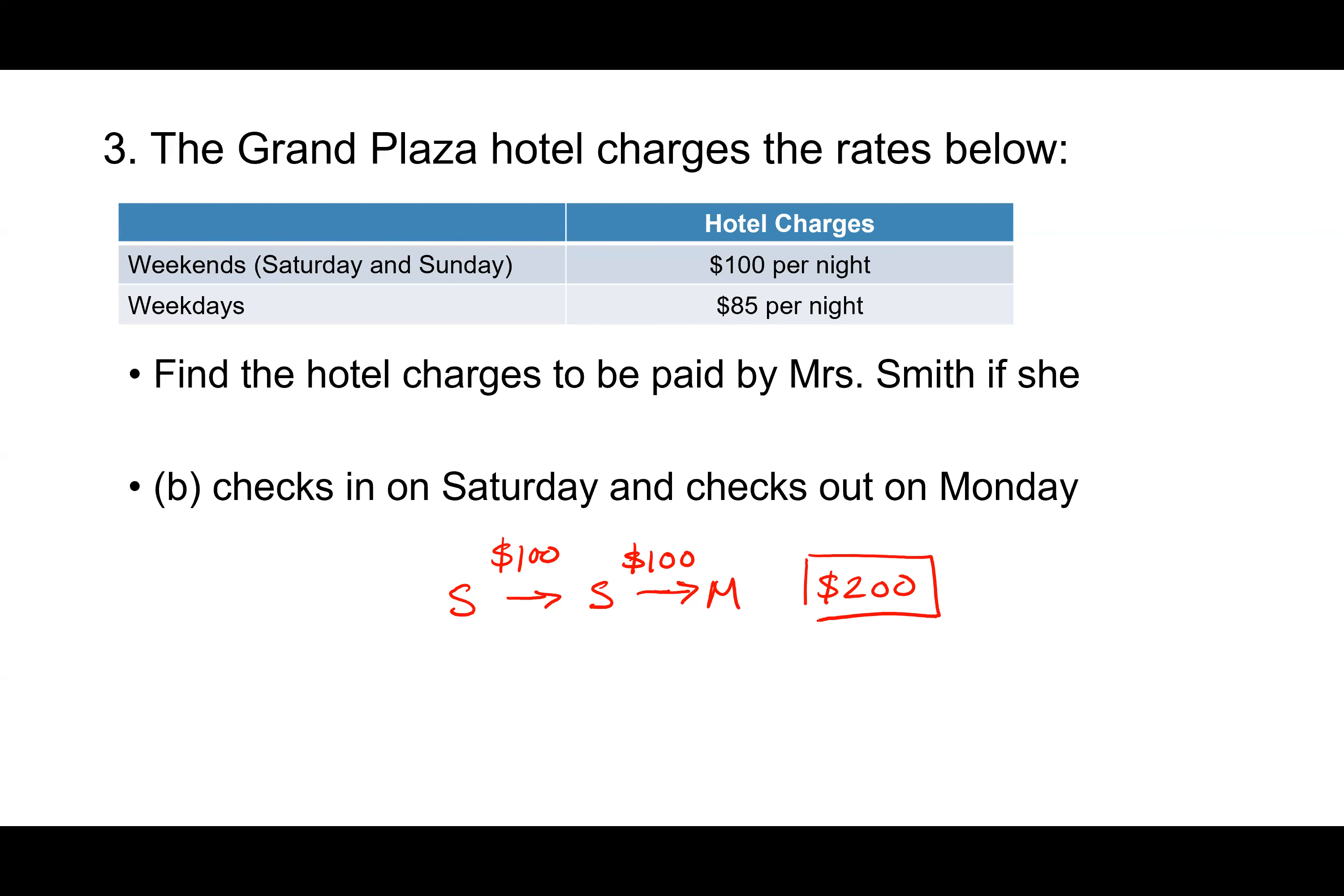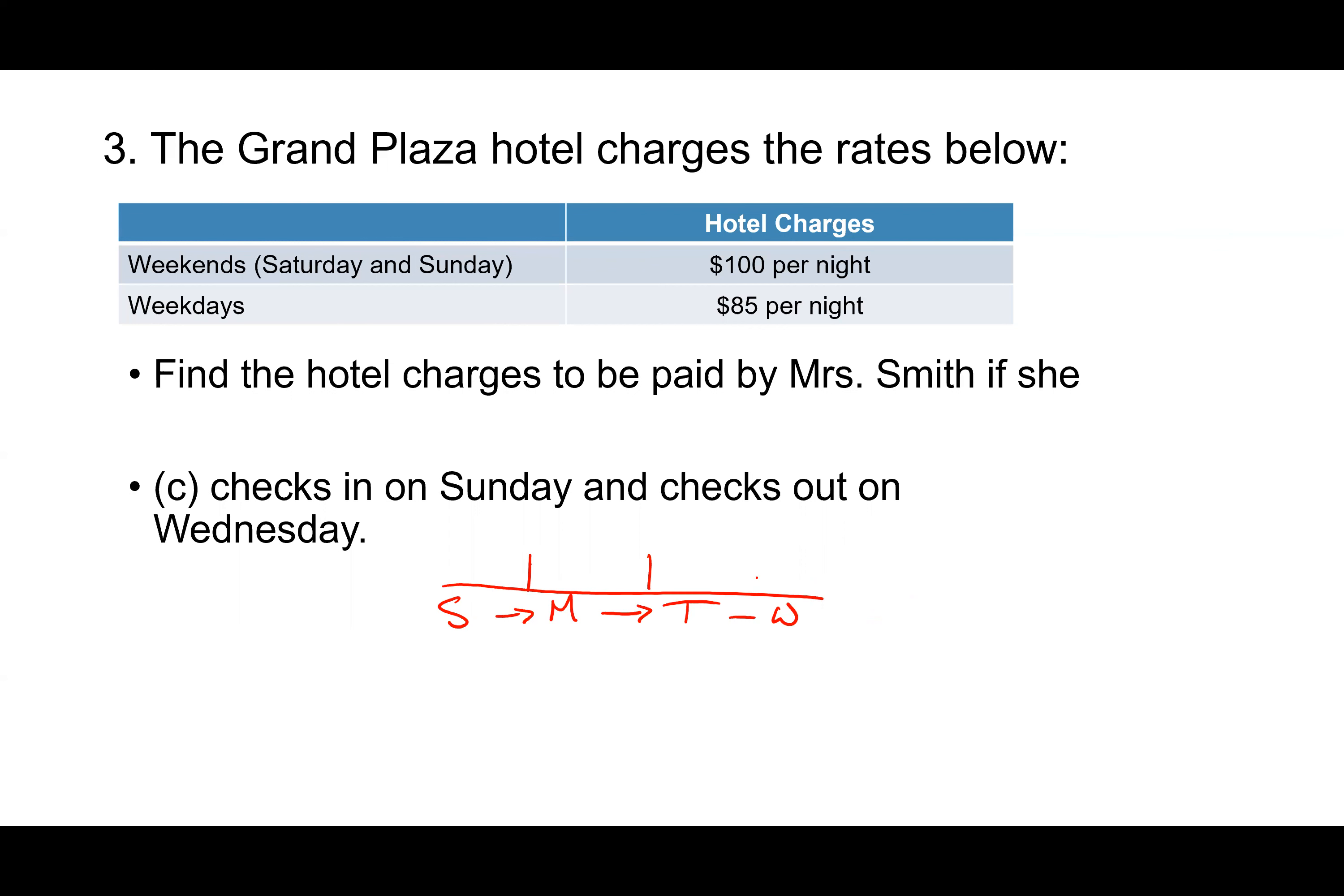And then how about letter C? She checks in on Sunday and checks out on Wednesday. What'd you guys have for that? Annie? Tell me how you did it. So on Sunday, she stays on Sunday night. So she stays the first night. It's $100. And then it's $85 and then $85. So the total is $270. Nice job.